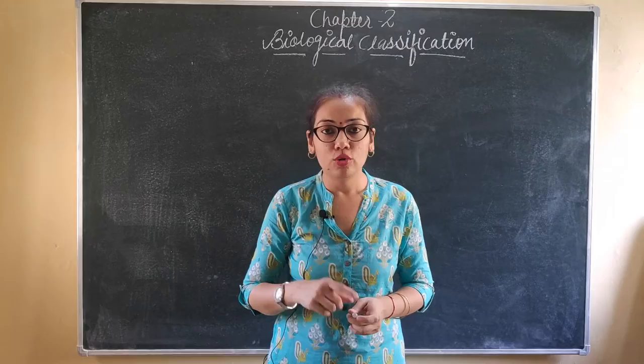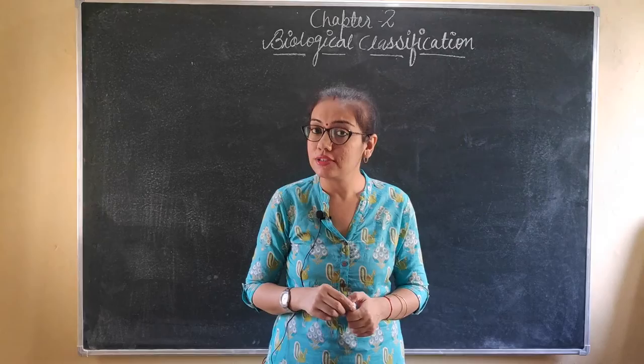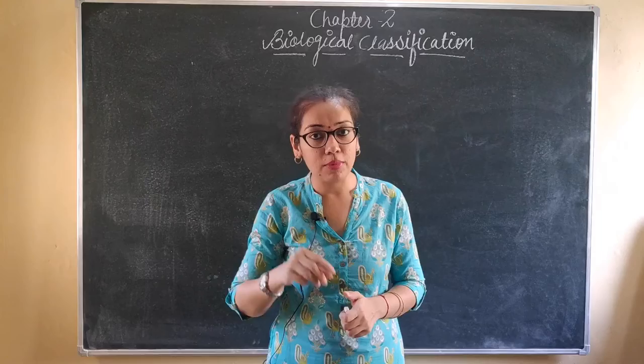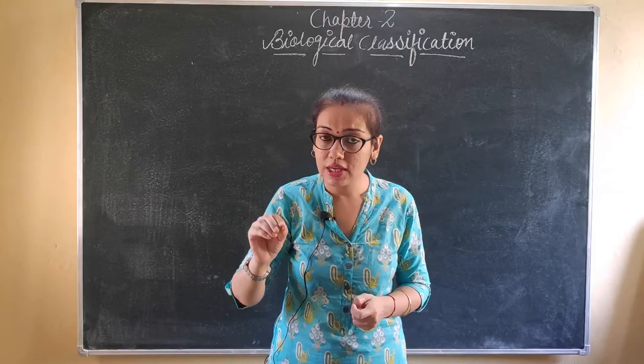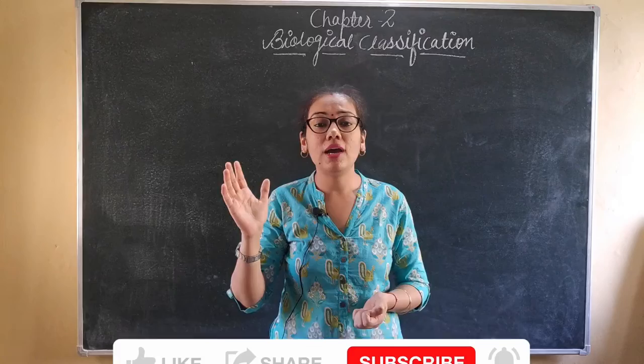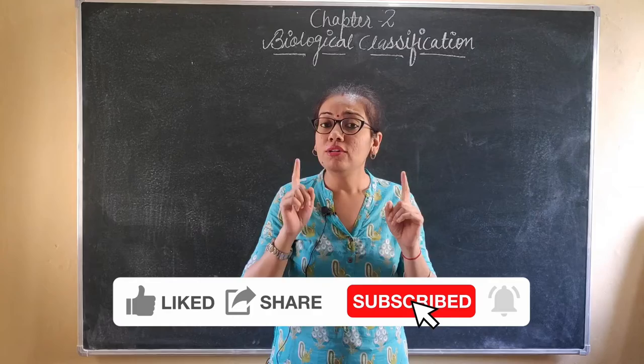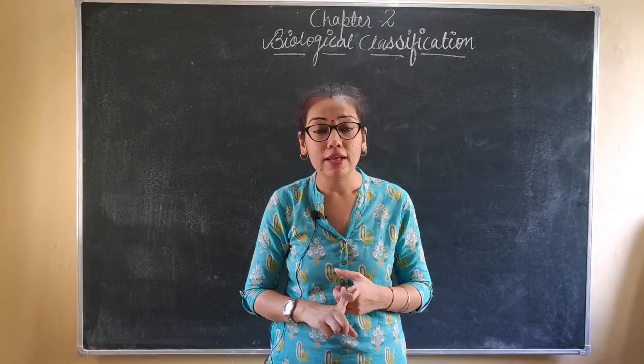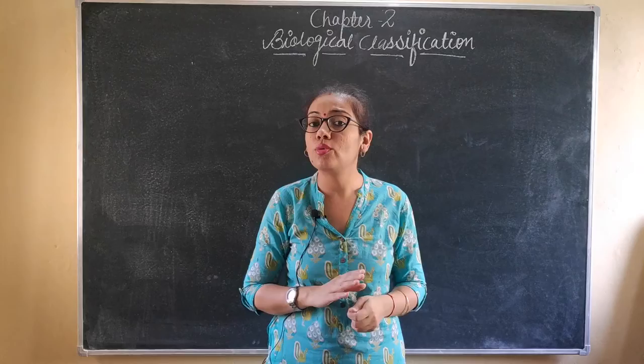Good morning students, welcome back to my channel, Biology with Meenakshi. In the previous class we started Unit 1, Chapter 2, which is biological classification. We covered two-kingdom classification and three-kingdom classification. The first was Aristotle's classification, then Carolus Linnaeus gave the two-kingdom classification, which had many problems and was rejected. After that, three-kingdom classification came from Ernest Haeckel, who added one new group.